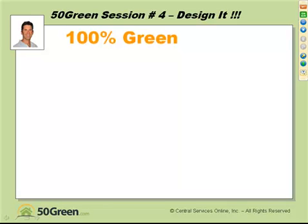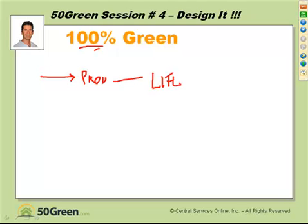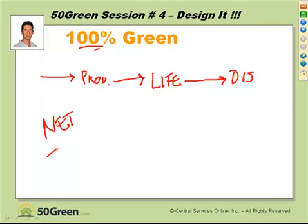100% green — I don't even know if that's a possible goal. What is 100% green? The Earth is 100% green. Probably you'd have to consider a cradle-to-grave study where it did no harm in its production, no harm in its life cycle, and no harm when it was disassembled — no environmental harm, no energy impact. We now have the concept of net zero homes, which means a home that produces as much energy as it uses, which is a terrific goal and is easily attainable with solar systems.